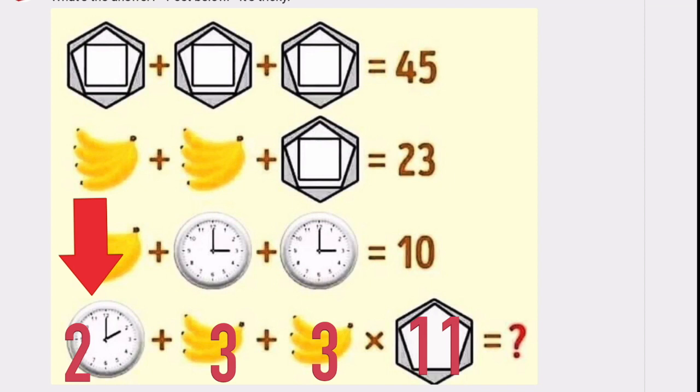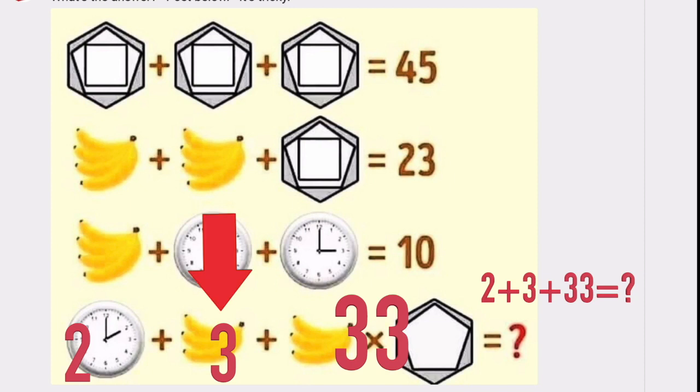So let's look at our line here. Two plus three plus three times 11 equals the answer. And the first thing we need to do is multiply the three times the 11 to make 33. And now we're going to add another three. And now we're going to add another two. And there's your answer.